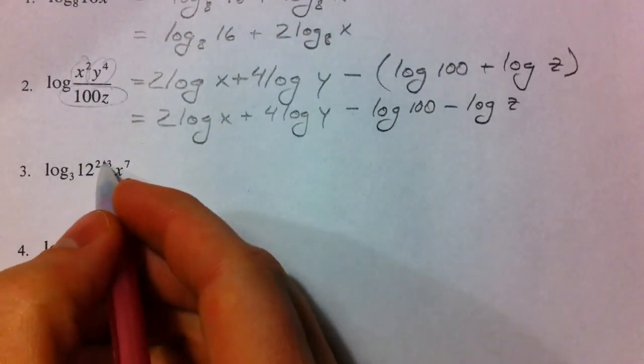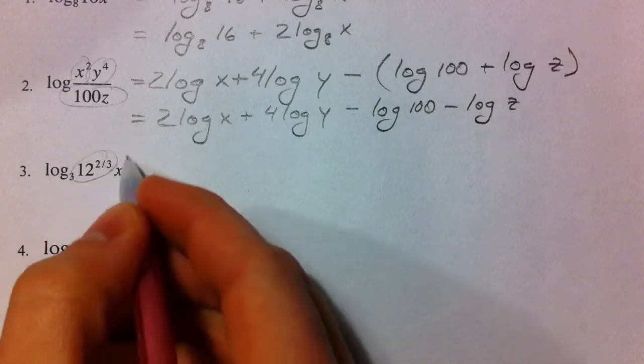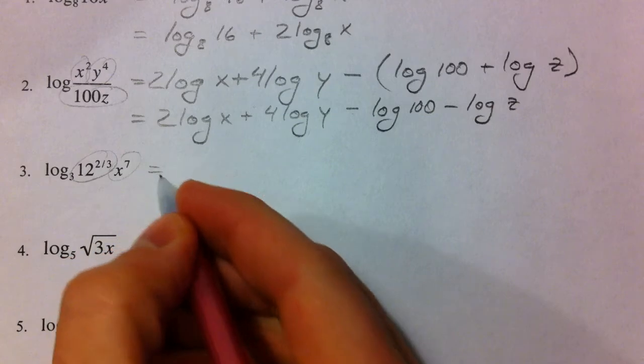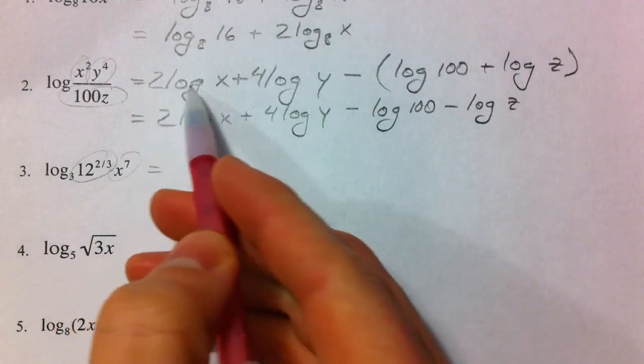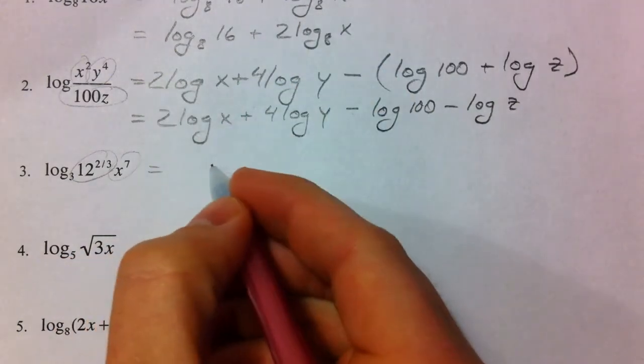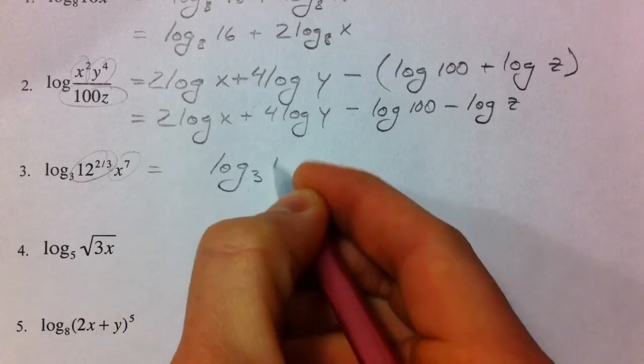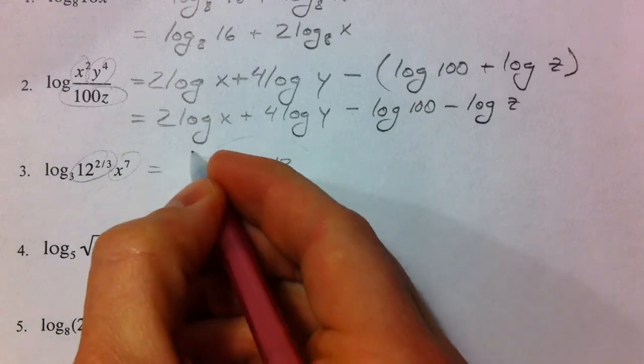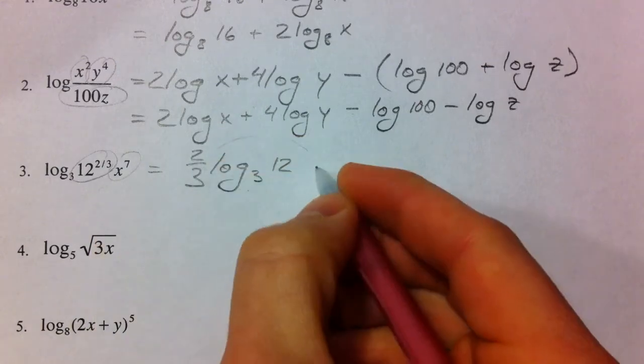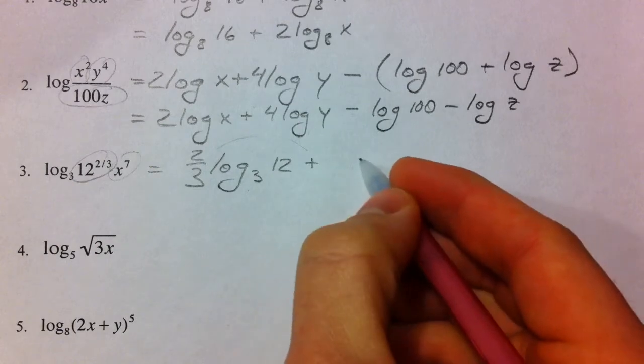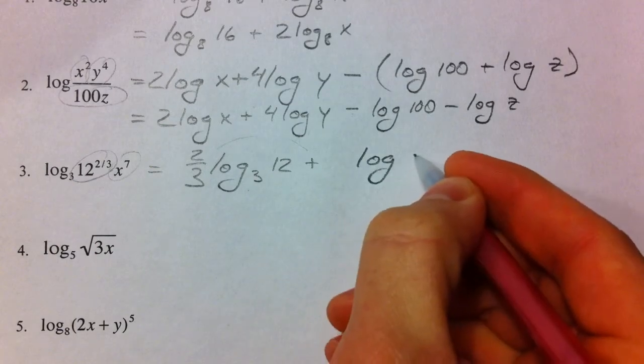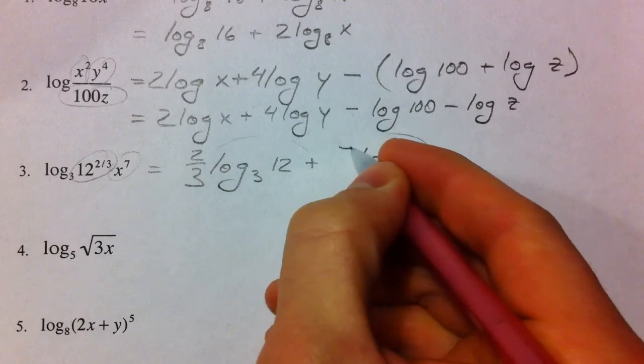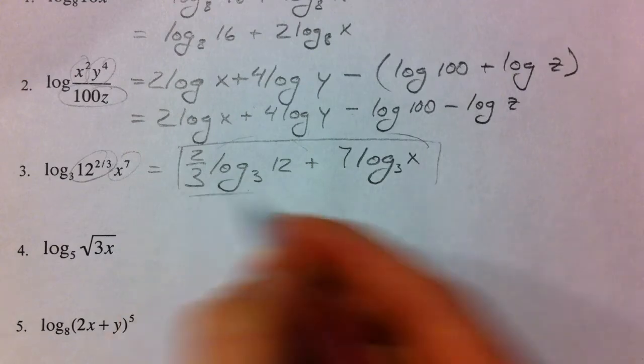All right. Next one. We've got 12 and x. Two separate logs that we're going to have. And then, we're going to have powers that come down in front of those. So, just like we did in the last problem, we're going to take care of the powers and separating them at the same time. So, we have log base 3 of 12. 12 is raised to the 2 thirds. That's going to come down in front with the last property. Plus, log of x. Same base. And, we're going to bring the 7 down in front. And, that is fully expanded.